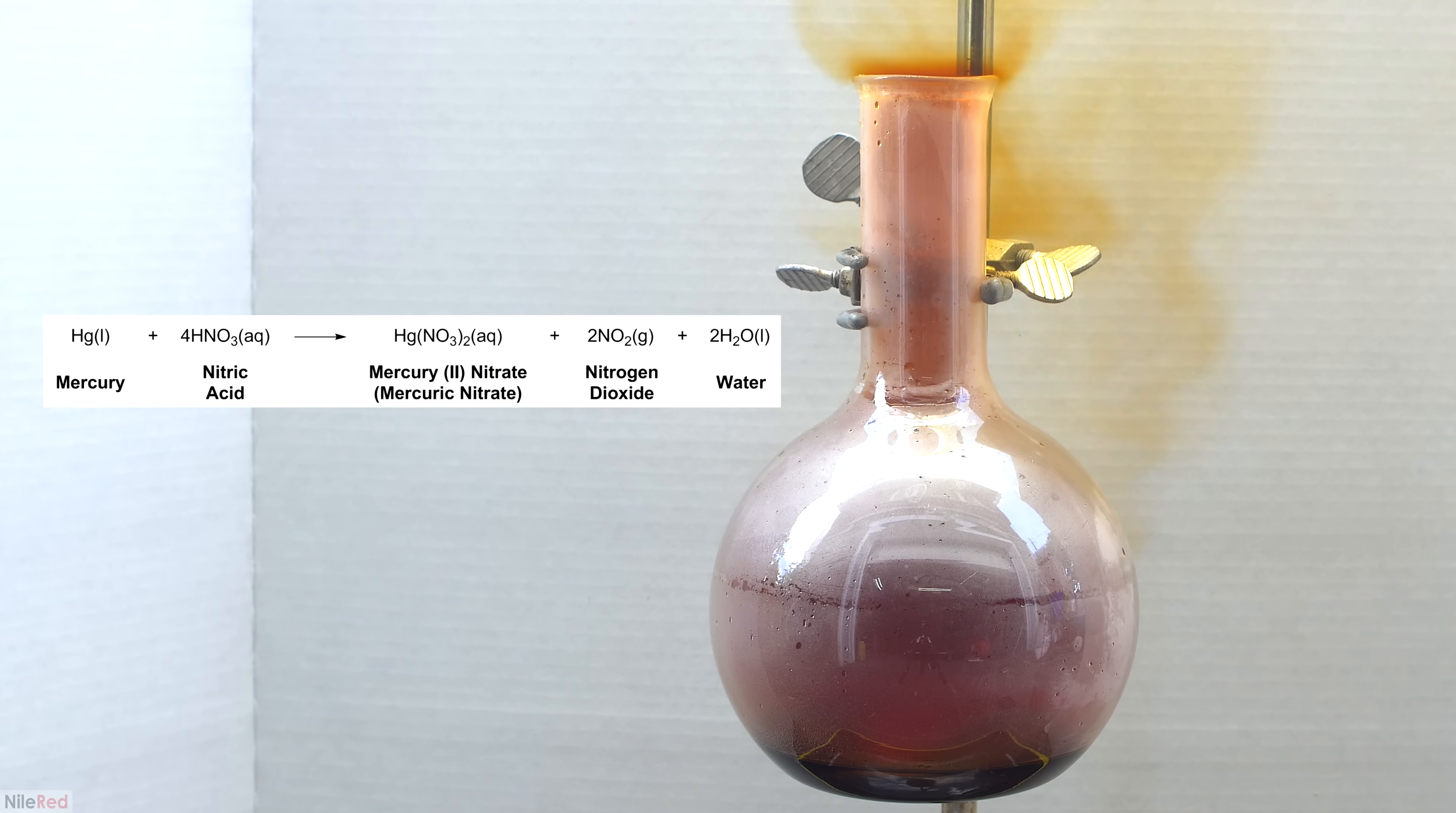Nitric acid is both an oxidizer and an acid, and because of this, it reacts with a lot of metals that other acids won't. You can see here that a strong reaction occurred when the nitric acid and the mercury were mixed, but if we were to add mercury to let's say hydrochloric acid, not much would happen.